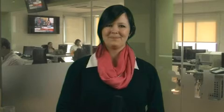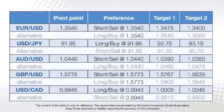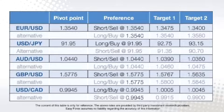Now let's take a look at what the currencies are doing this morning. The euro dollar pivot points at 1.3540 with a preference to enter in short positions at 1.3540. The dollar yen pivot points at 91.95 with a preference to enter into long positions at 91.95. The Aussie dollar pivot points at 1.0440 with a preference to enter in short positions at 1.0440. The sterling dollar pivot points at 1.5775 with a preference to enter in short positions at 1.5775.